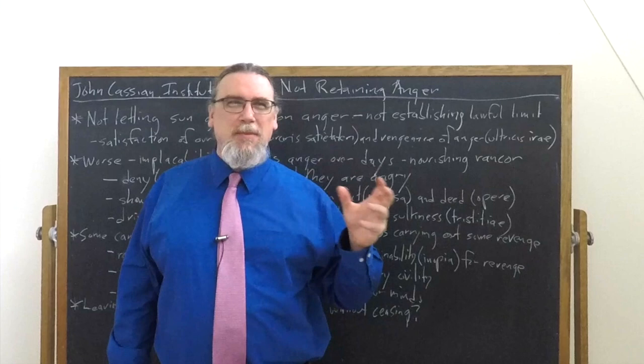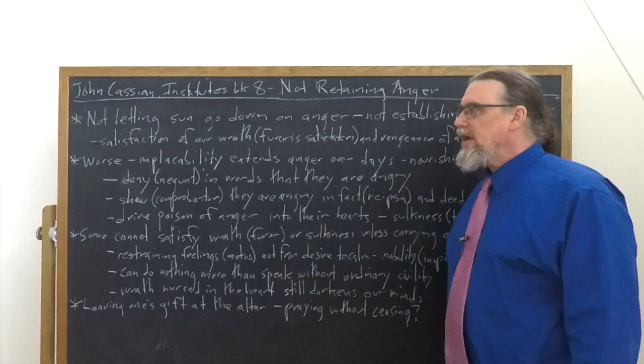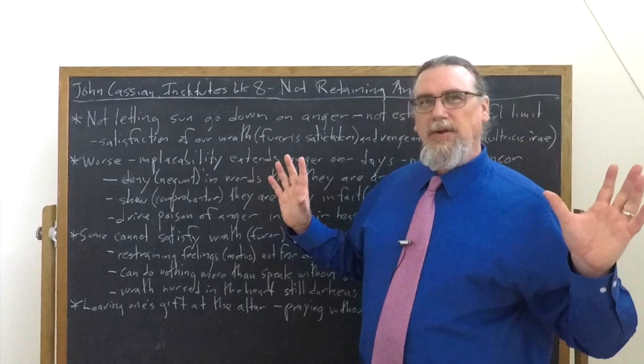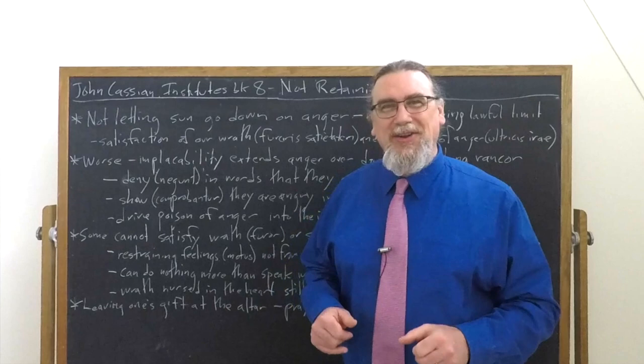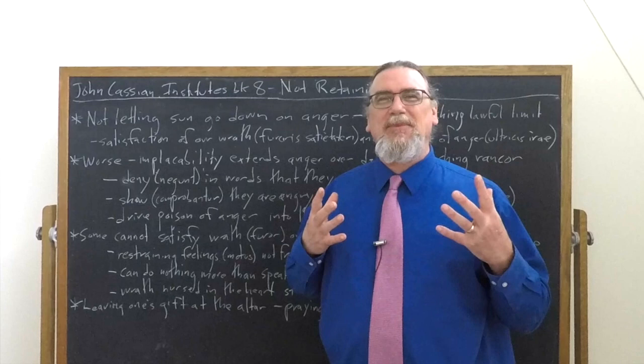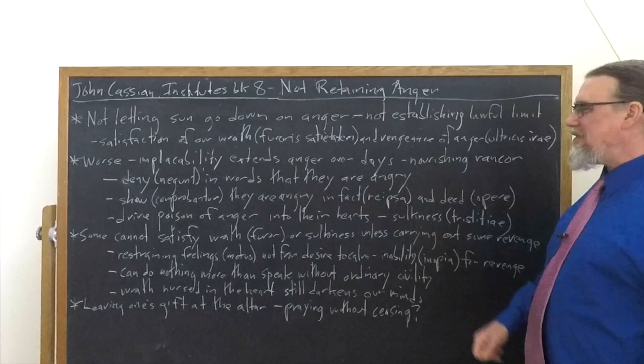And then he says something very interesting here. He says that they deny, they say, I'm not angry. Don't worry about me. They deny in words, in verbis, that they're angry, but they show, or actually, this is a very strong term, comprobantor. They prove of themselves systematically that they are actually angry. And how do they do this? He says in two different modalities: in fact, re ipsa, in the matters themselves and in their deeds, in their actions, opere, in the deed, literally.